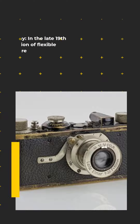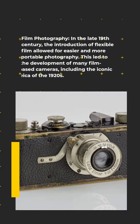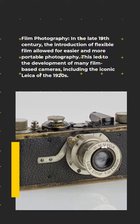Film photography: in the late 19th century, the introduction of flexible film allowed for easier and more portable photography. This led to the development of many film-based cameras, including the iconic Leica of the 1920s.